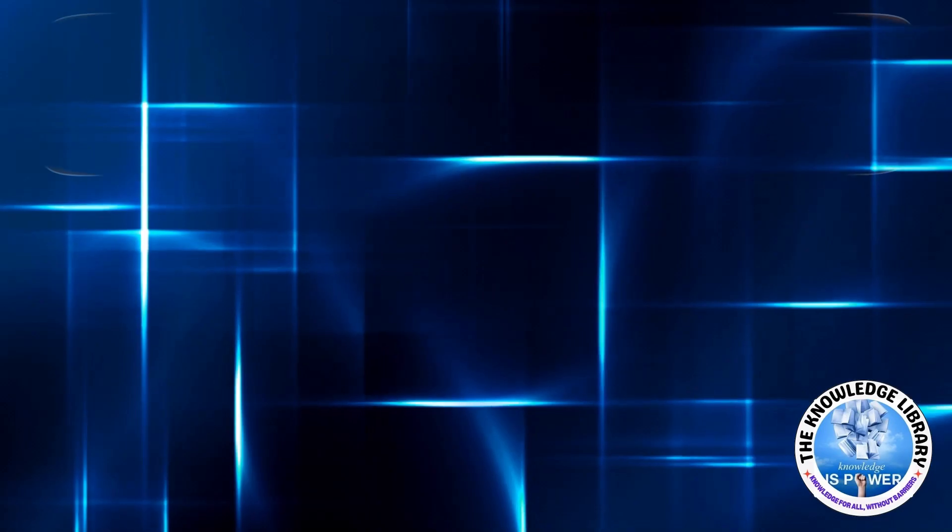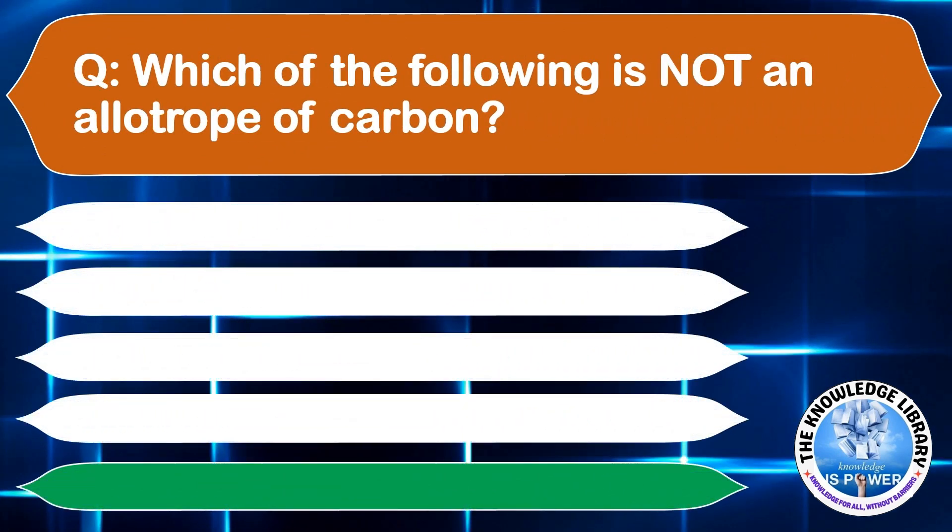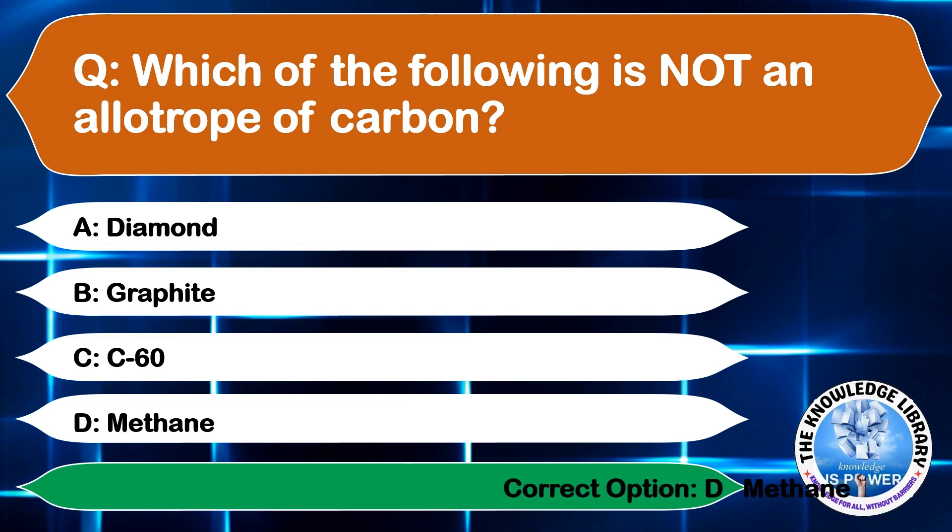Which of the following is not an allotrope of carbon? A: Diamond, B: Graphite, C: C60, D: Methane. The correct answer is option D, Methane.